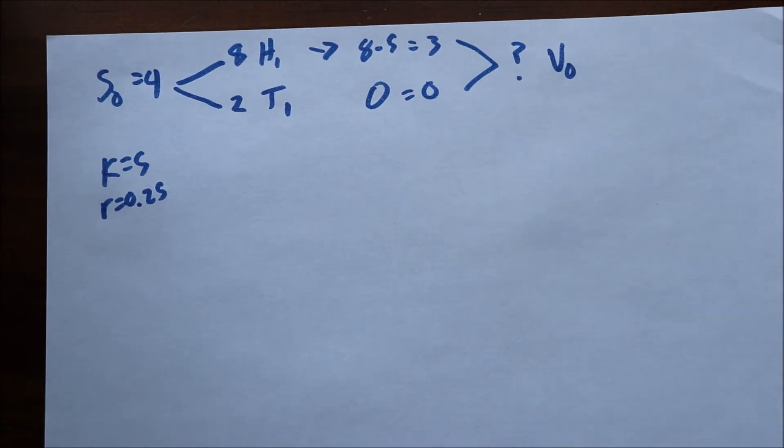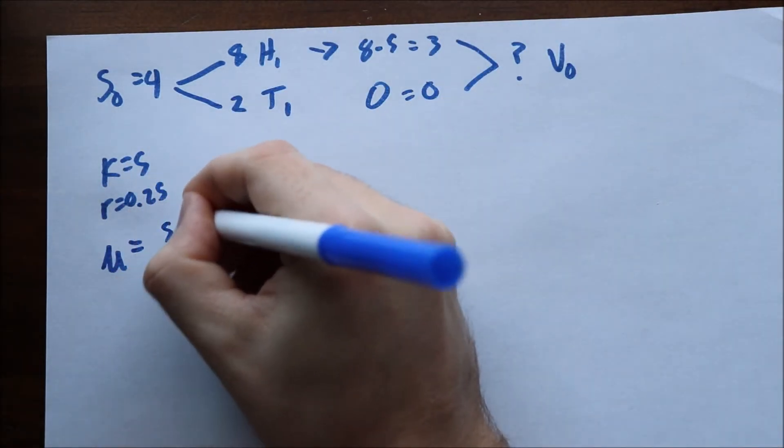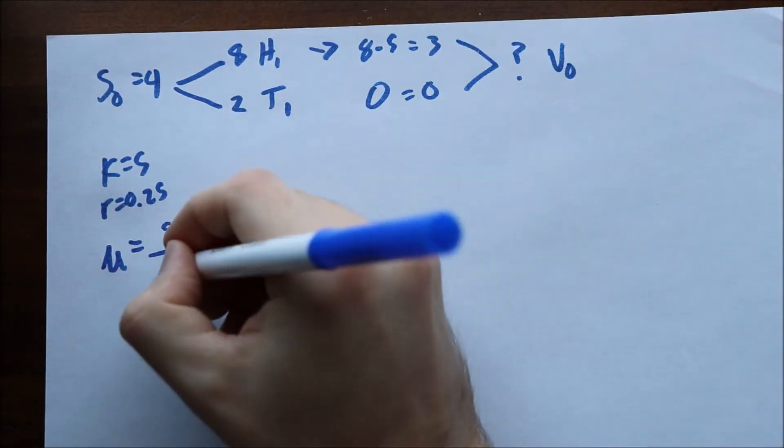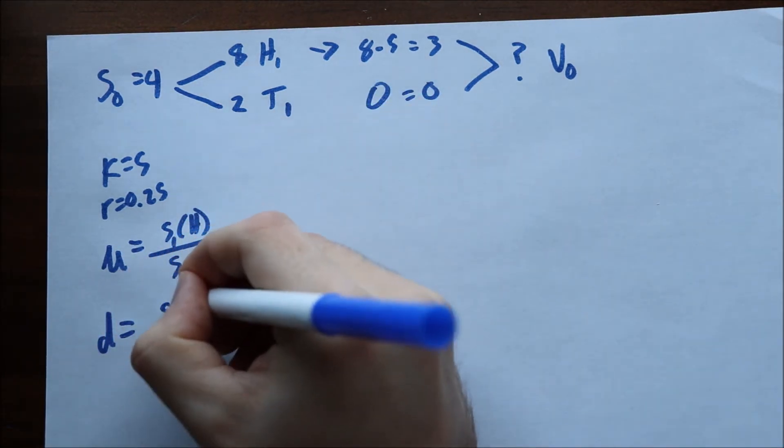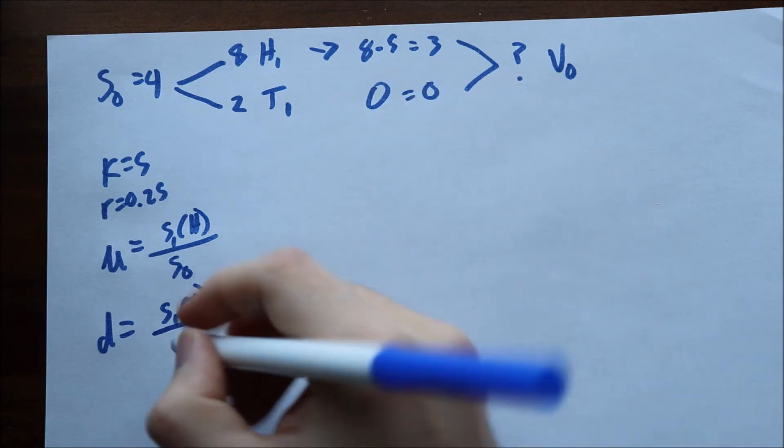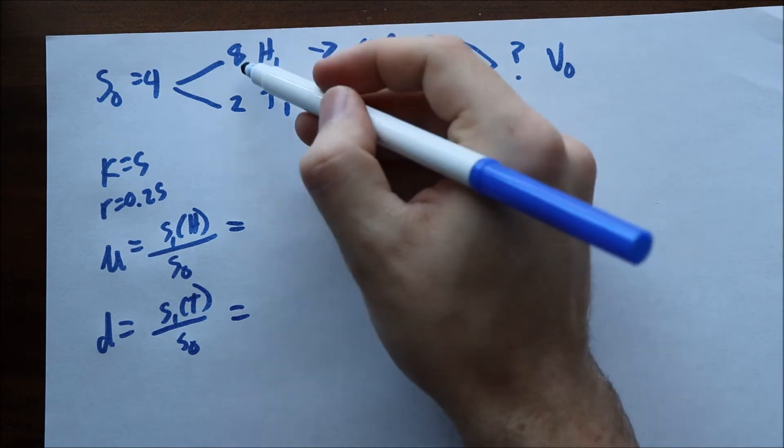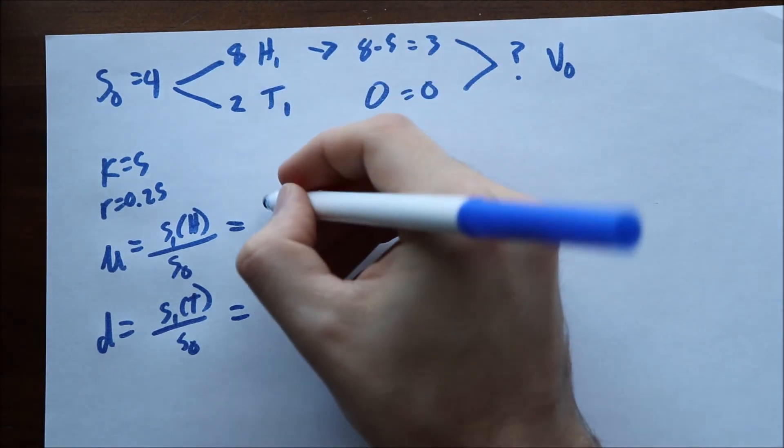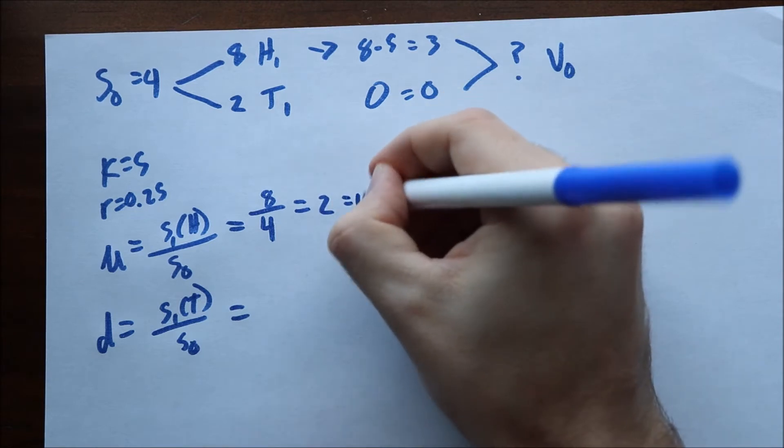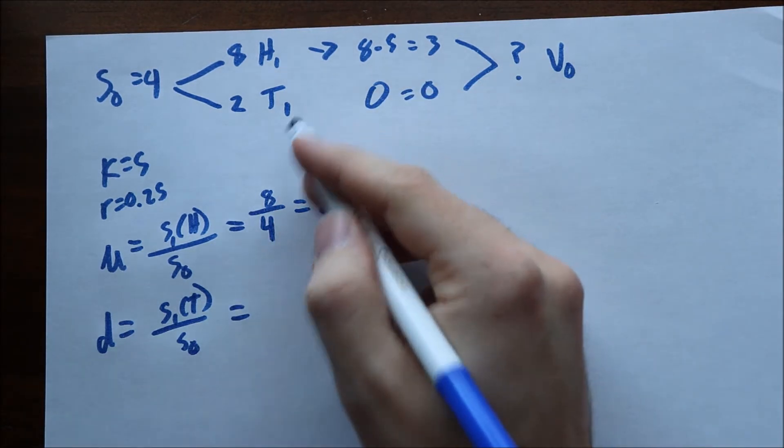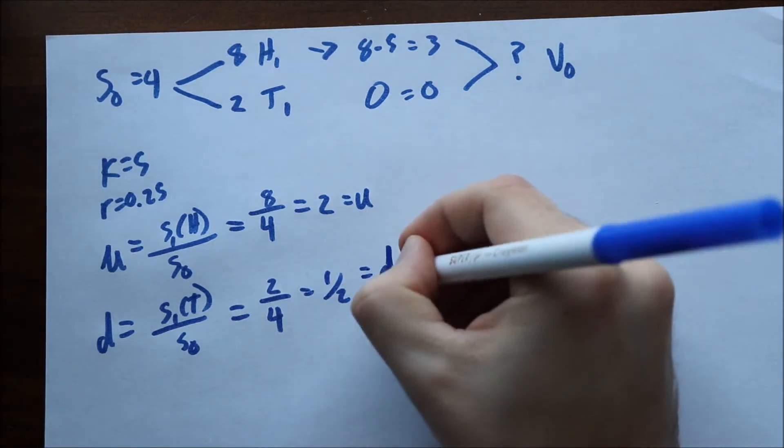These are actually simple to come up with. If they don't give them to you, U is equal to S of 1 of H divided by S of 0. And D is equal to S1 of T, which is equal to S of 0 here. So you divide these. In this case, we have S of 1 of H is 8 divided by 4. So we're going to put 2. This is our U. Again, for the tails, we have 2 divided by 4. This gives us 1 half for our D.